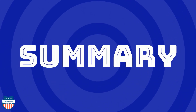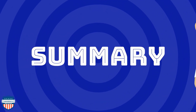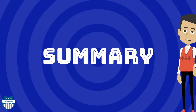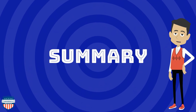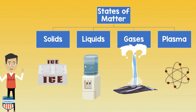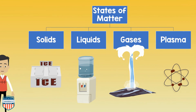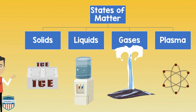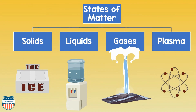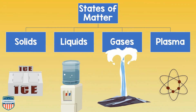To summarize, we need to understand that matter is all around us: solids, liquids, gases, plasma — everything that you see, touch, or even breathe is made of matter. Matter is made out of atoms, and the arrangement of atoms determines whether the substance is solid, liquid, gas, or plasma. These are all states of matter.